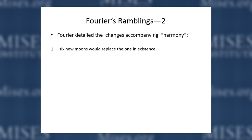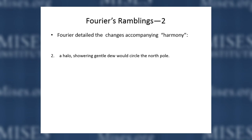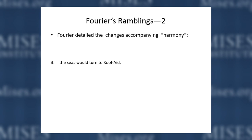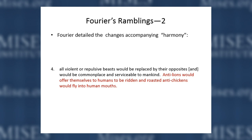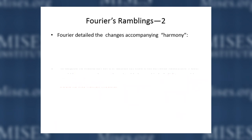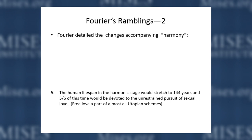There were some other things he said that are too funny to pass up. In this harmonic stage, six new moons would replace the existing one, a halo would appear around the North Pole, the seas would turn to fruit juice, all violent beasts would be replaced by opposites — anti-chickens would roast themselves and pop into your mouth when you're hungry, you could ride lions. The human lifespan would stretch to 144 years, and five-fifths of everyone's time would be devoted to free love.